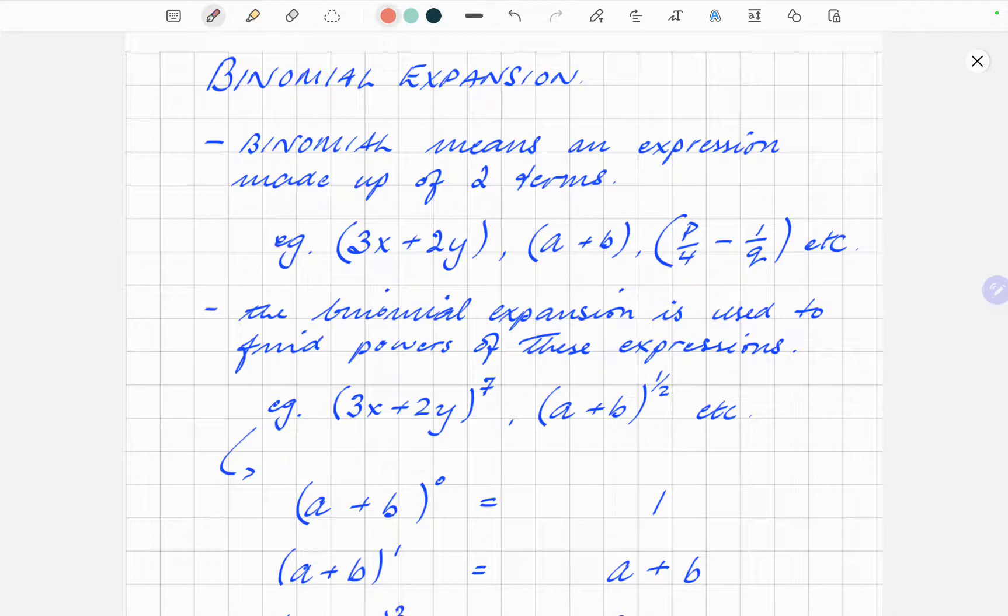A binomial is effectively a two-term expression. For example, 3x plus 2y, a plus b, p over 4 minus 1 over q, whatever you like. It's basically two things separated by a sign. That's a binomial.